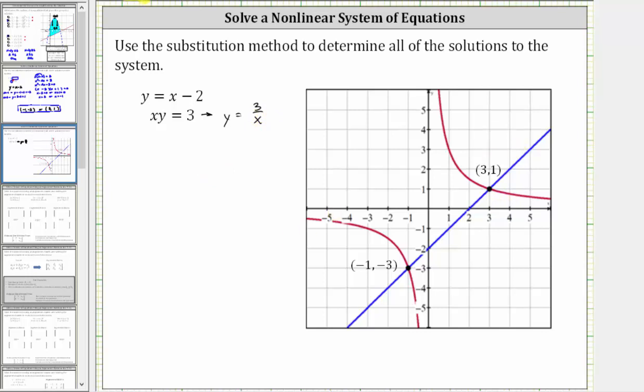And notice how there are two points of intersection. One ordered pair solution is negative one comma negative three. And the second ordered pair solution is three comma one, which verifies our work is correct. I hope you found this helpful.